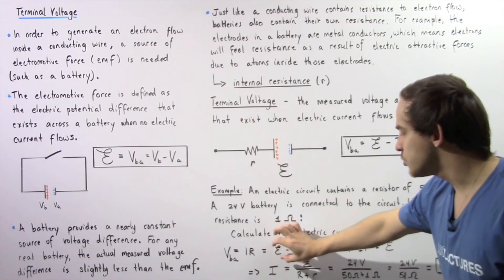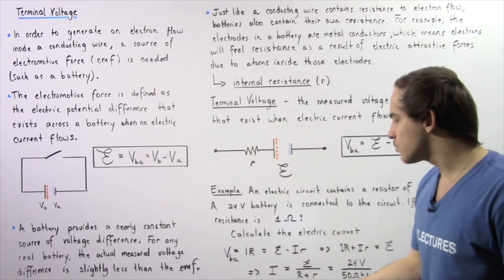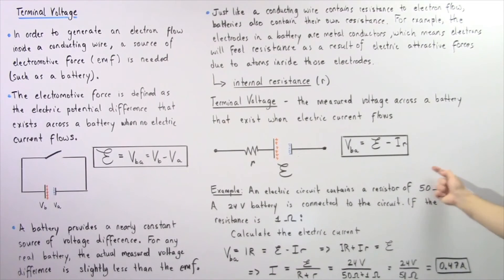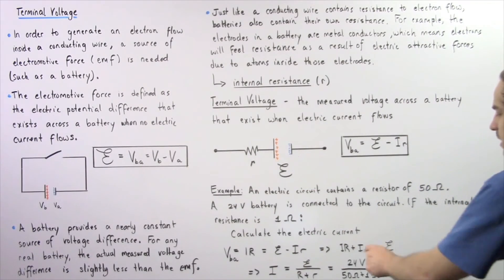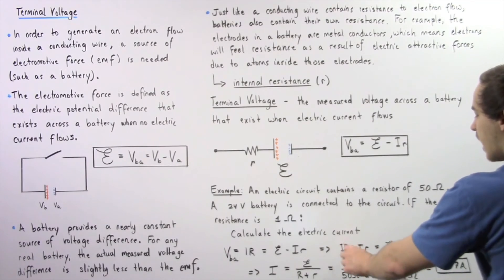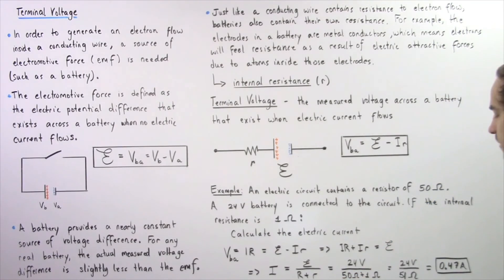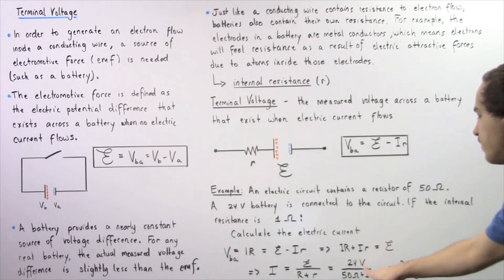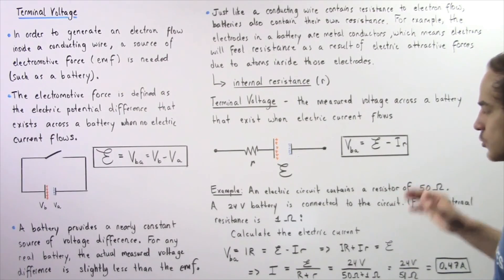So I times R equals the EMF minus I times lowercase r, where lowercase r is the internal resistance and uppercase R is the resistance of the wire. Bringing all the I terms to one side: I·R plus I·r equals the EMF. Factoring out I gives us I equals EMF divided by (R + r). Substituting: I equals 24 volts divided by (50 ohms plus 1 ohm), which gives 24 divided by 51, approximately 0.47 amps.